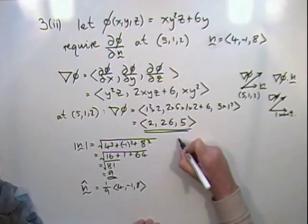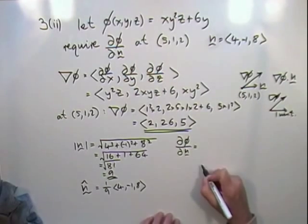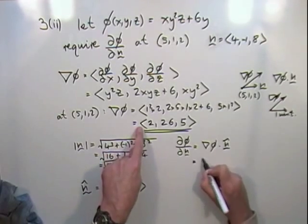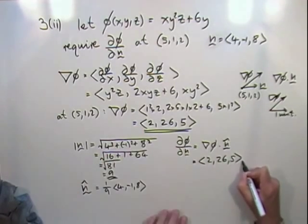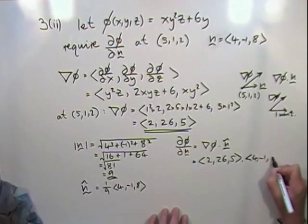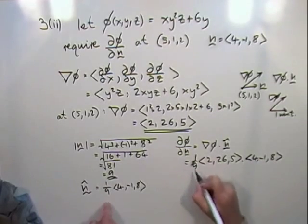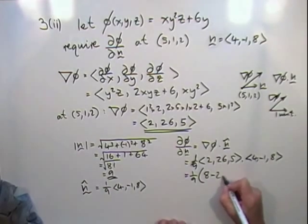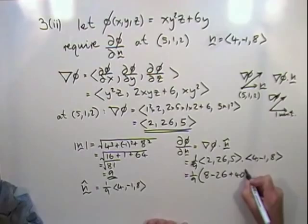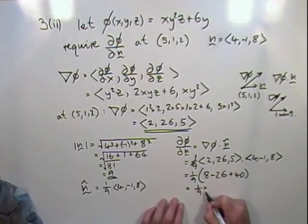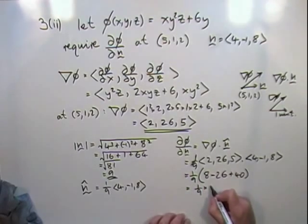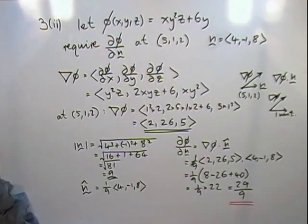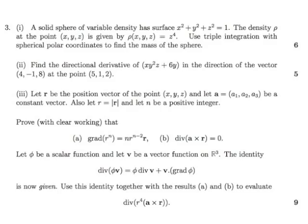Right. Now, we can do it. Now we can find the amount that varies in that direction. So it's going to be the grad of phi dot the unit vector. So that's going to be <2, 26, 5>, times <4, -1, 8>. And put the fraction at the front there. So it's going to be a 1/9th of. And now it's just the scalar product. So multiplying the corresponding components. 8 minus 26 and 40. So that comes to a 9th of. That heads up to 22. So that becomes 22 upon 9, not 29.